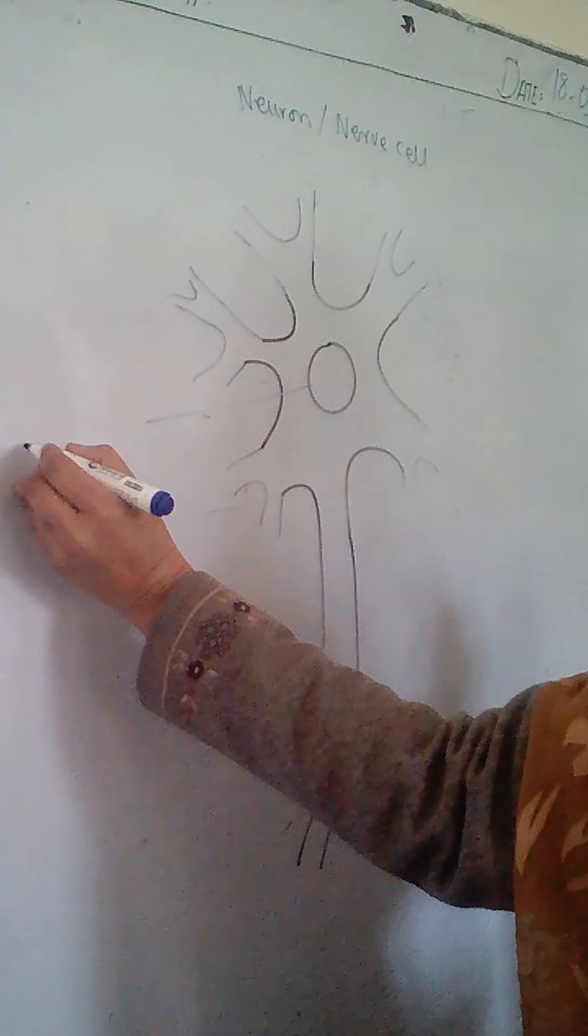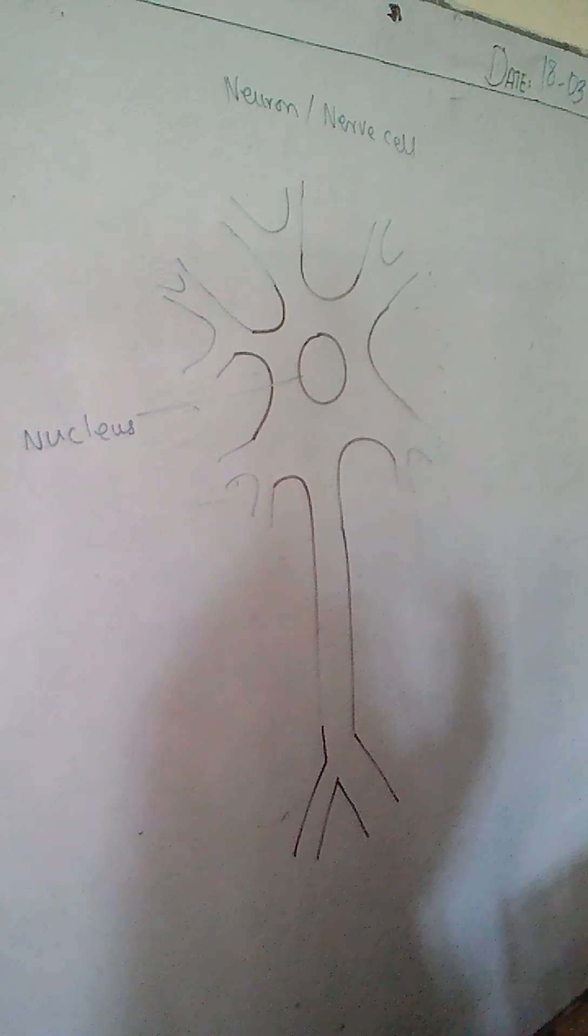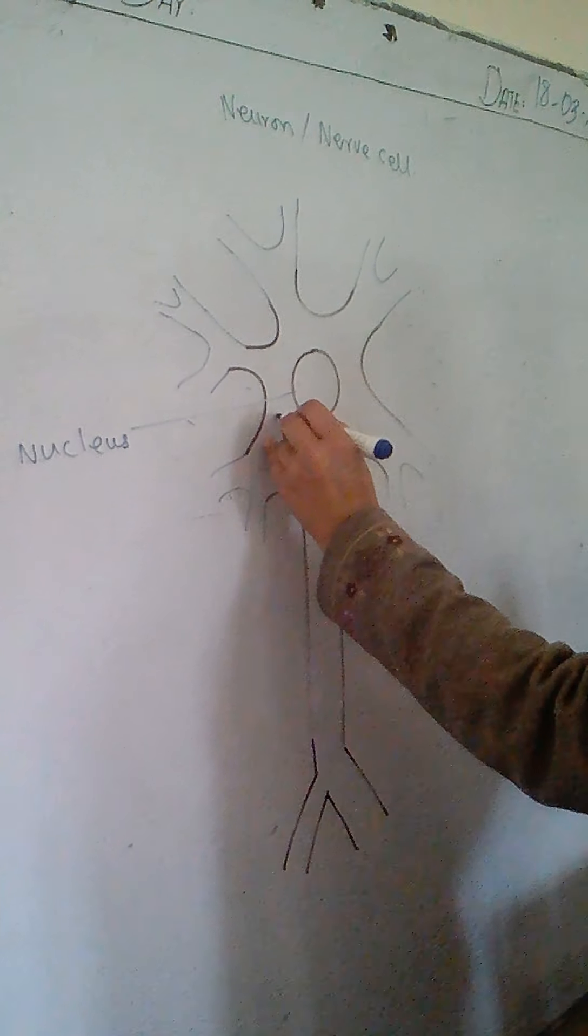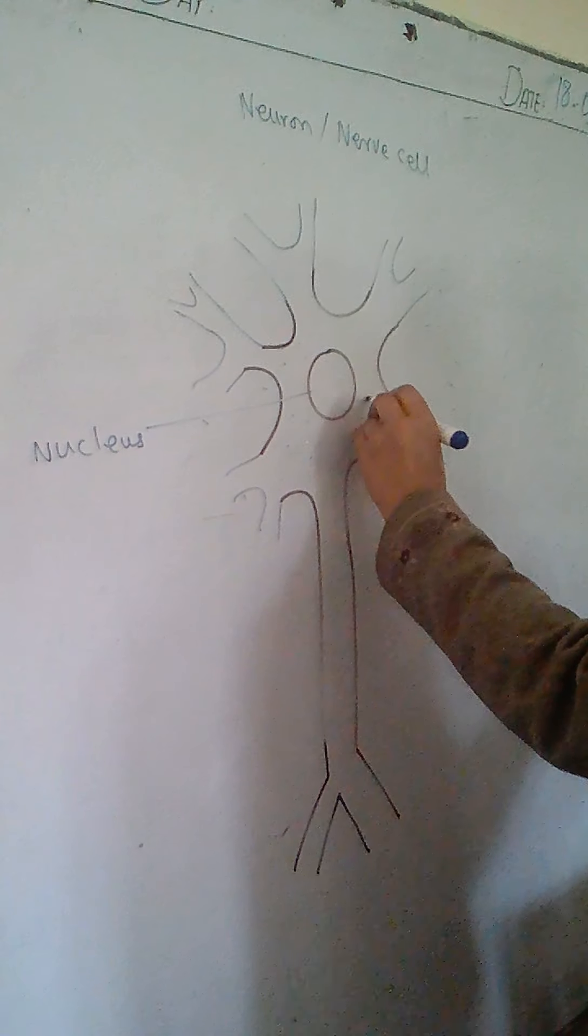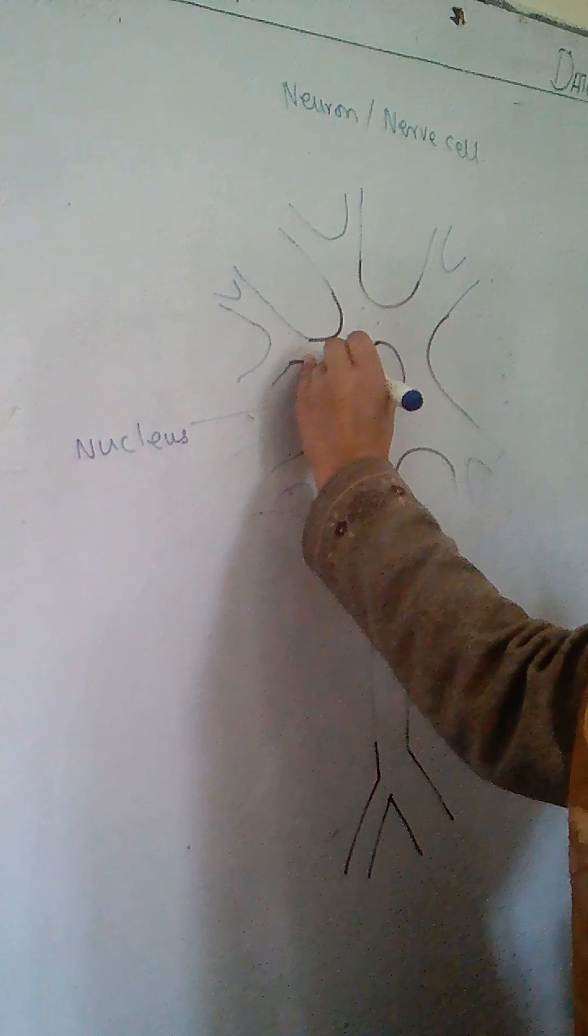The central part is called nucleus. Then the jelly-like substance present is called cytoplasm.